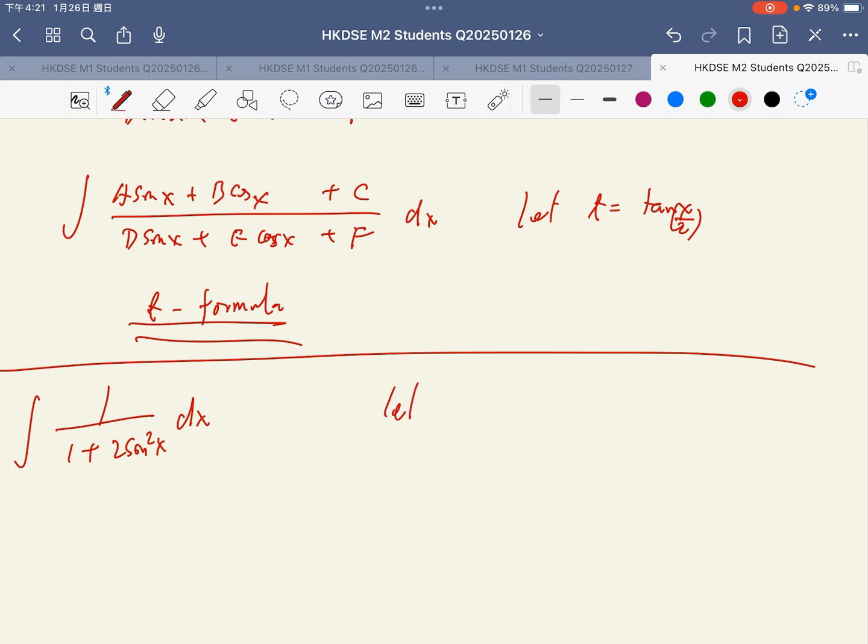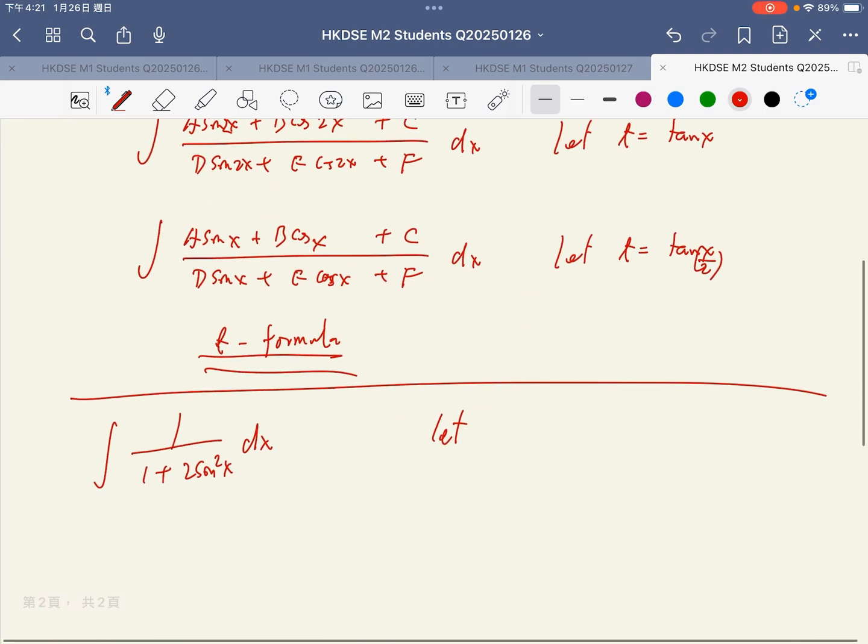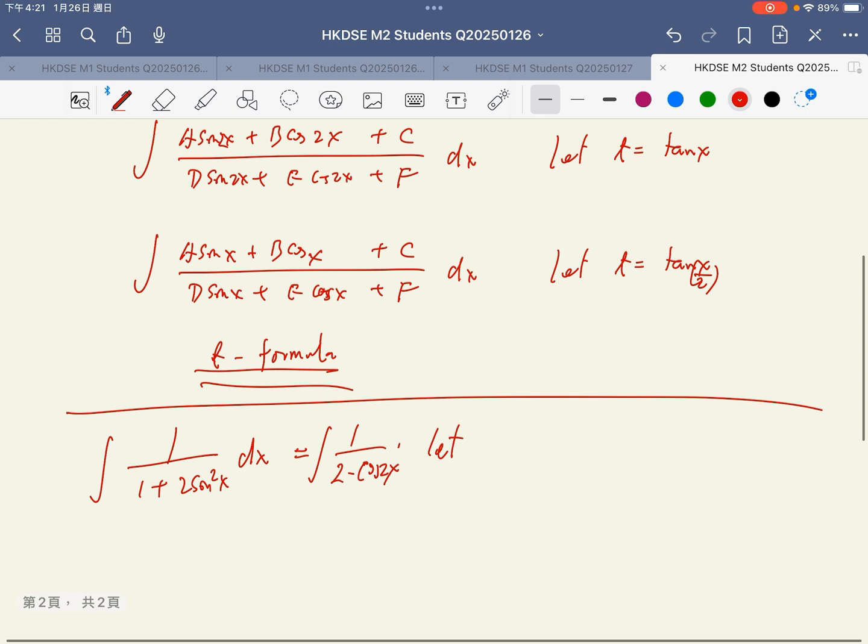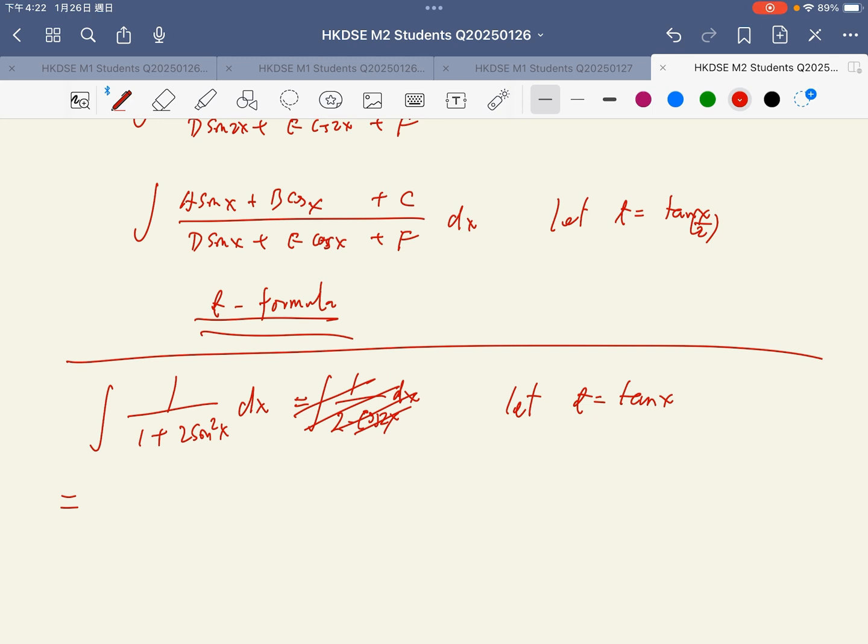In this case, because of the format, you can let t equal to tangent x. But I don't prefer you change so far. I work from here. dt equal to secant square x dx. Then it is cosine square x, dx equals dt over secant square x.